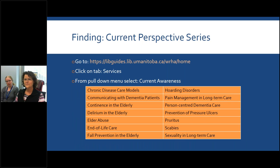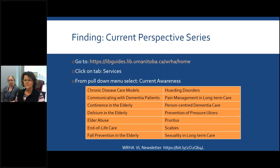We also have our current perspectives service. If you go back to the homepage and under the services tab, select current awareness. We have a whole bunch of bibliographies of recent literature on topics of interest to gerontology, geriatrics, and long-term care. There's really a whole bunch more and we constantly are adding materials to this site. You can request specific topics and we can also set up a personalized alert service, which basically sets up a search in PubMed or a different database and will automatically email you new results on your particular topic area whenever any are published. I would also recommend subscribing to our WHA Virtual Library newsletter.